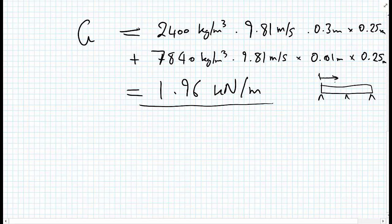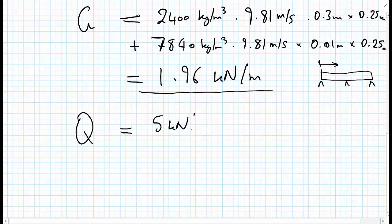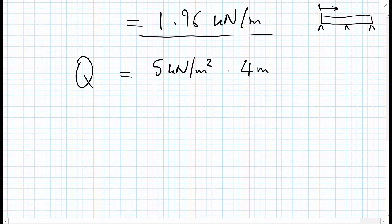We can now move on to the live loading. The live load in the standard is called Q, and we're told we have 5 kilonewtons per meter squared with a tributary width of 4 meters. Therefore our live loading is 20 kilonewtons per meter along the beam.